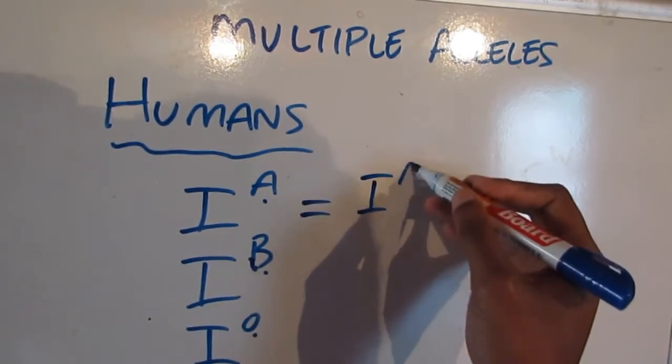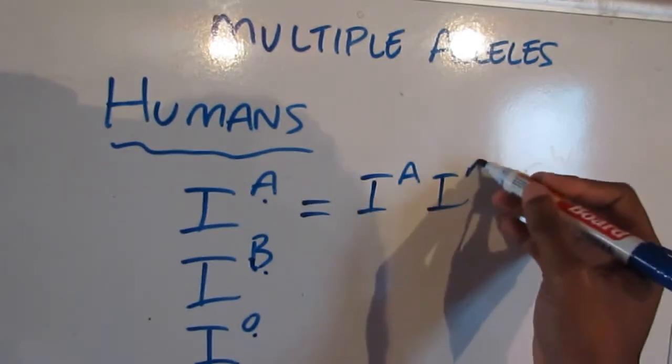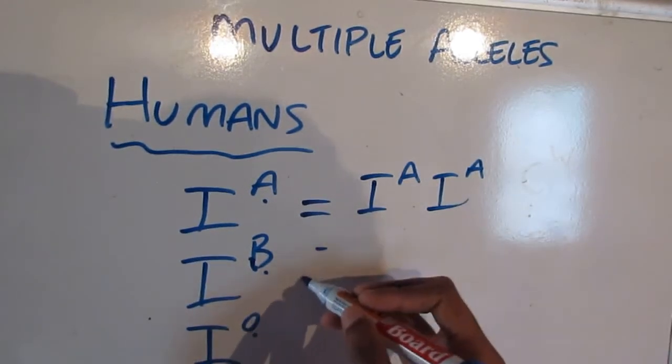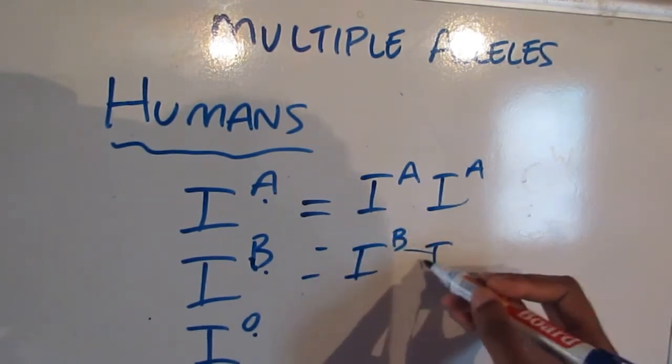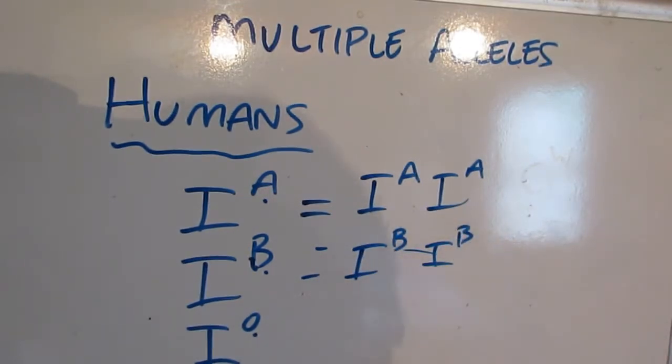So the combination of alleles that can give us our IA or antigen A phenotype is IA, IA. For B it's IB, IB and for O it's IO, IO.